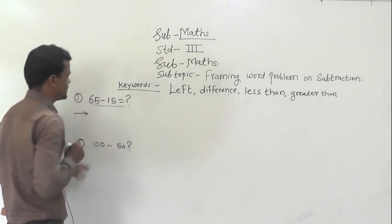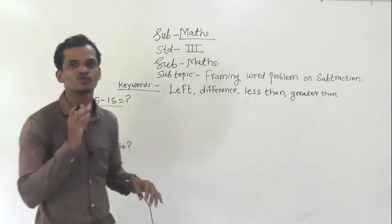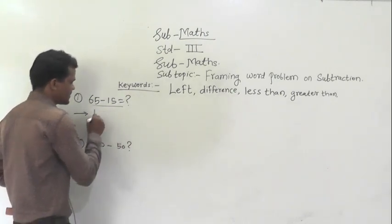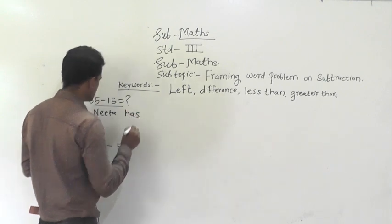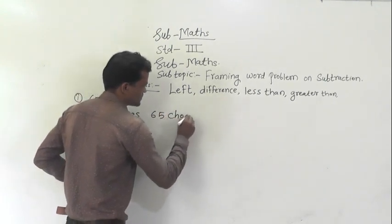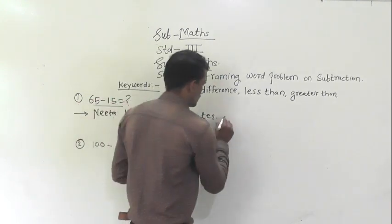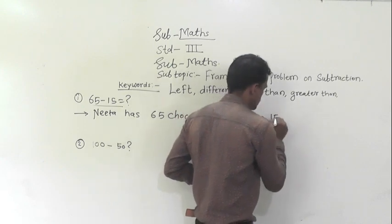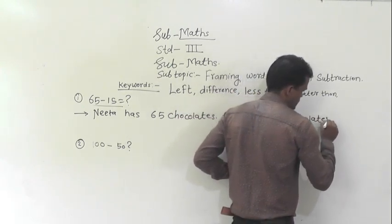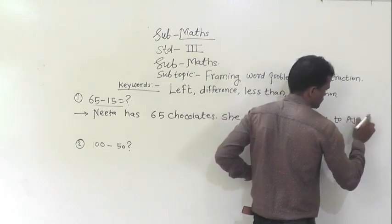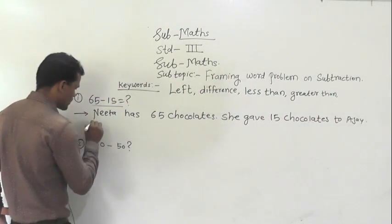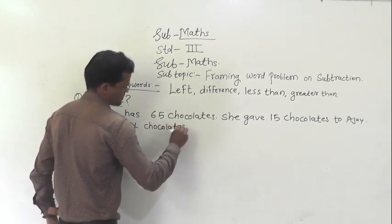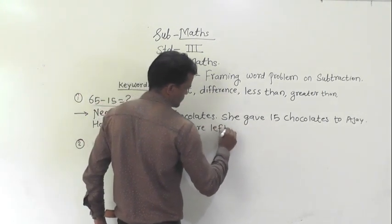So first, the subtraction fact is 65 minus 15. By using this subtraction fact, we have to frame the word problems. Now, I am framing word problems. Neeta has 65 chocolates. She gave 15 chocolates to Ajay. How many chocolates are left with her?